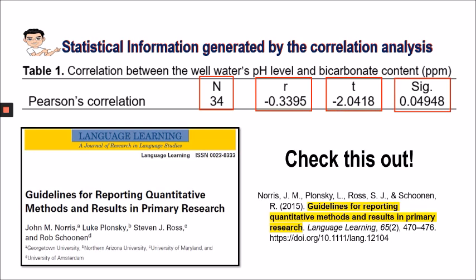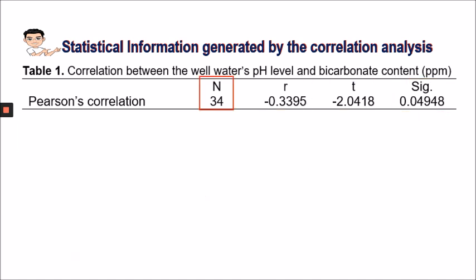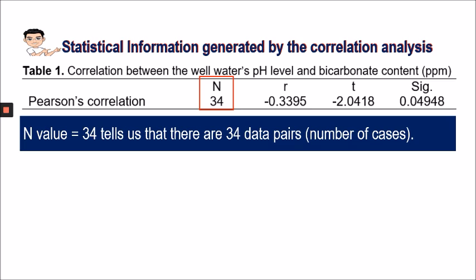If you want to know more about the guidelines for reporting quantitative methods and results, please check this article by Jan M. Norris et al. The value of n here tells us that there are 34 data pairs or number of cases.